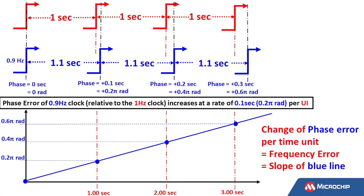As mentioned in the previous video, we prefer to express phase in radians. So let's do that here. After one period, the phase of the blue clock versus the red clock is 0.2π radians. After two periods, that phase has increased to 0.4π radians. And after three periods, it's 0.6π radians, and so on.